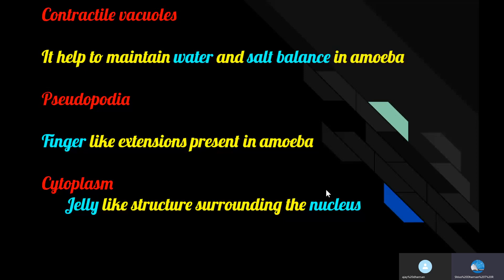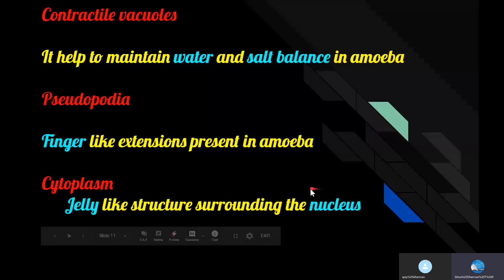Since amoeba does not have specialized organs for nutrition, it uses finger-like extensions called pseudopodia. When prey such as other microscopic organisms come near, the pseudopodia extend out towards the prey and surround it to form a cavity called the food vacuole. Digestive juices act on the food to digest it. The digested food is then absorbed and assimilated to obtain energy and perform metabolic functions, and the undigested food is ejected.